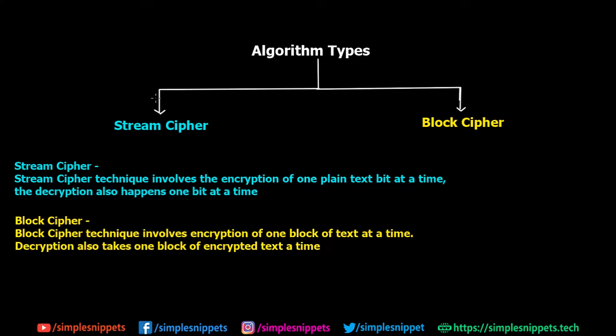Up until now, following this tutorial playlist, we've seen quite a lot of cryptographic techniques like Vernam cipher, Hill cipher, Caesar cipher, and so on. Basically, these algorithms — depending upon how they get encrypted and decrypted — can be categorized into two types: stream cipher and block cipher.